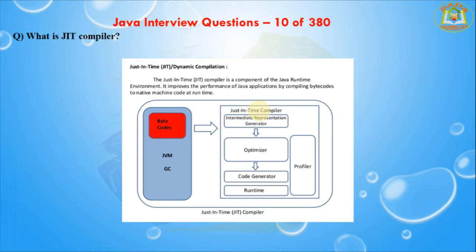In the Java programming language and environment, a Just-In-Time compiler is a program that turns a Java program's interpreted instructions into instructions that can be sent directly to the processor. After you have written a Java program, the source language statements are compiled by the Java compiler into bytecode rather than into code that contains instructions for a particular hardware platform. The bytecode is platform-independent code that can be sent to any platform and run on that platform.